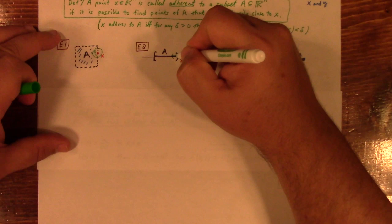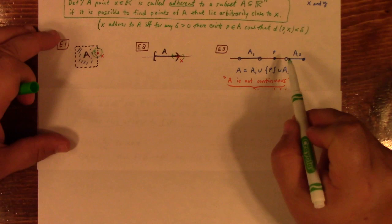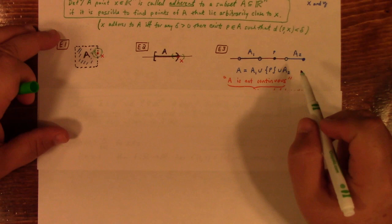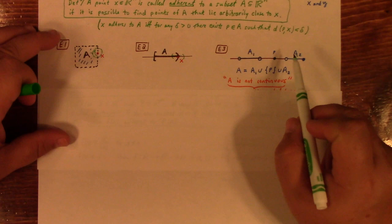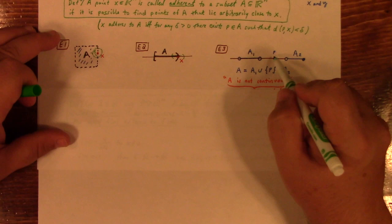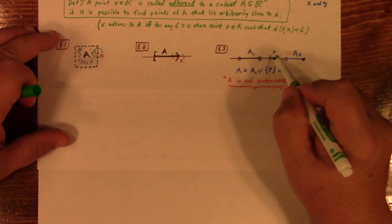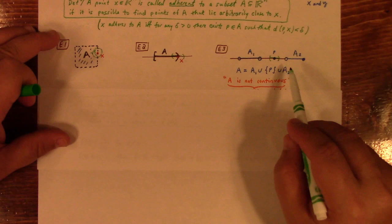Now over here, the point P does not adhere to the set A1, and the point P does not adhere to the set A2. Because if I look at distance like this far from P, then only P is in there. It's not stuck to A1, it's not stuck to A2. And if you put A1, P, and A2 together, it gives you the set A.